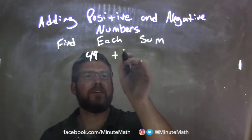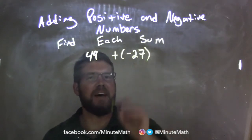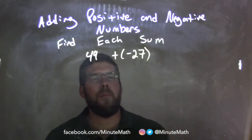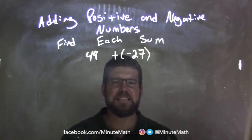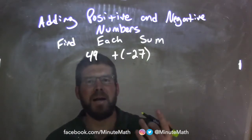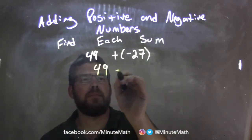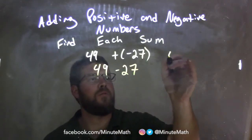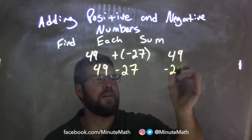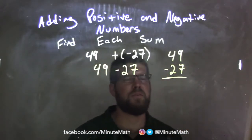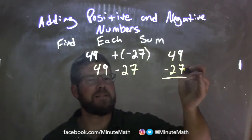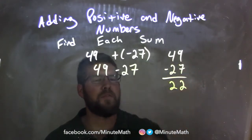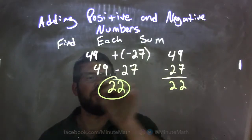49 plus a negative 27. We know that 49 plus a negative 27 is the same thing as 49 minus 27. So 9 minus 7 comes out to be 2, and 4 minus 2 comes out to be 2. Our final answer is 22.